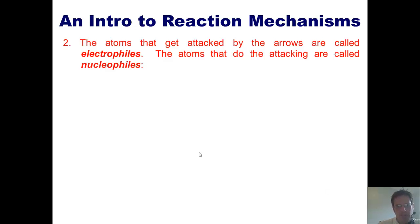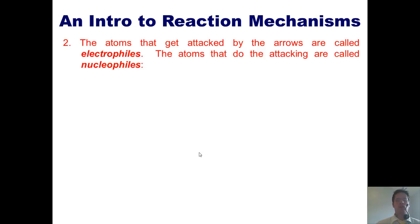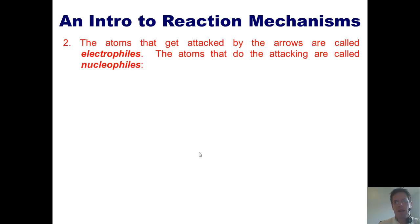Number two: the atoms that get attacked by the arrows are called electrophiles, and the atoms that do the attacking are called nucleophiles. Remember, the suffix '-phile' means something that likes. If I'm a thermophile, I like heat. If I'm a popcornophile, I like popcorn. If I'm an electrophile, I'm something that likes electrons.